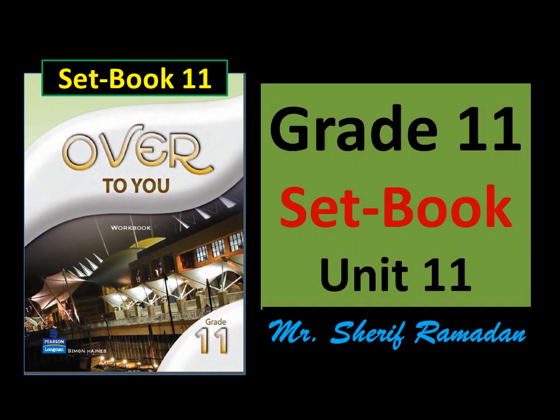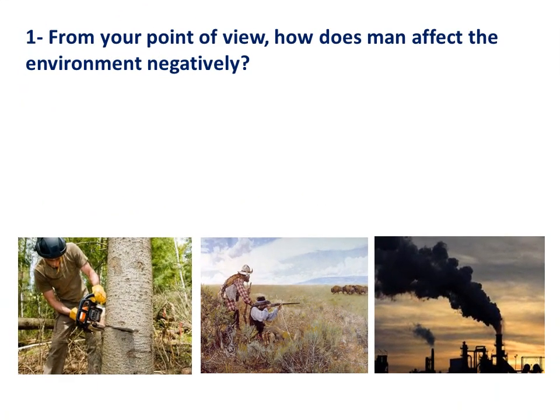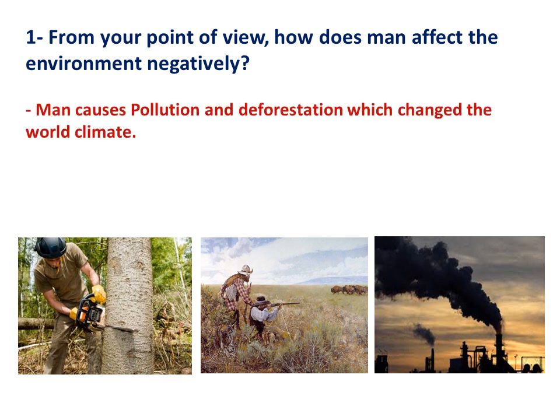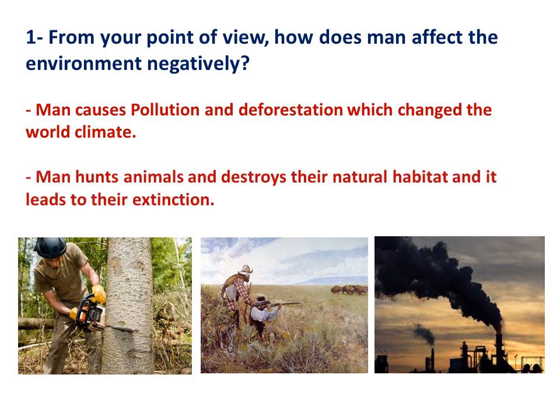Grade 11 Seedbook Questions, Unit 11. Question 1: From your point of view, how does man affect the environment negatively? Man causes pollution and deforestation which changes the world climate. Man hunts animals and destroys their natural habitat and it leads to their extinction.